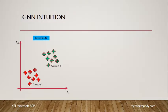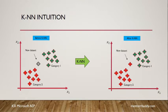When we feed the training data, KNN creates a graph containing two classes or categories — represented here in red and green. When we feed a new data point, the KNN algorithm determines which class it belongs to. The training time of KNN is the least compared to other algorithms; however, the testing or predicting time is higher compared to other algorithms.